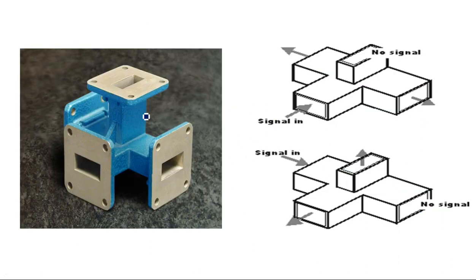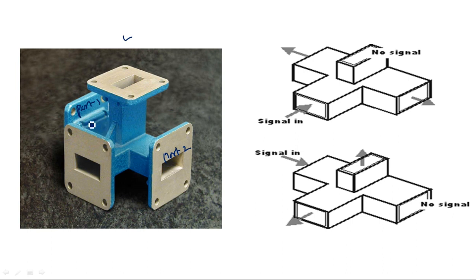Now let us see the waveguide. This is the waveguide generally available in microwave laboratories. See the direction of the waveguide — this is the main waveguide which has port 1 and port 2. These two are collinear ports. As in the case of H-plane and E-plane T-junctions, these two are collinear ports where we can see through from one to another. If we see from port 1, we can observe port 2, and from port 2, we can observe port 1.